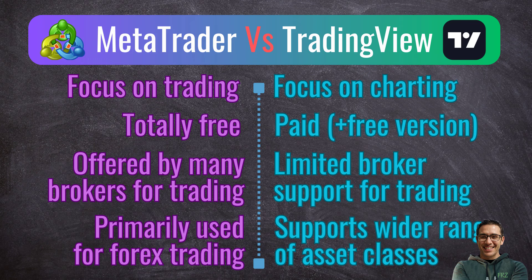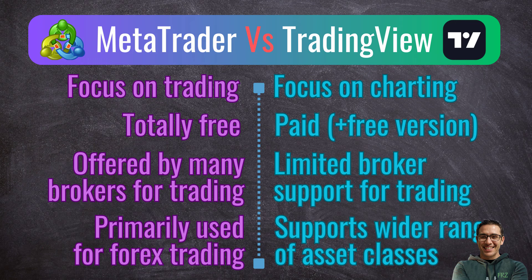Both MetaTrader and TradingView have desktop, web, and mobile apps. In MetaTrader, the desktop version is usually the fully featured software, while the web and mobile apps have limitations. For TradingView, both the web app and the desktop app have quite the same features, while the mobile app has some limitations. MetaTrader is completely free, while TradingView is a paid service with a free version that has limited features.